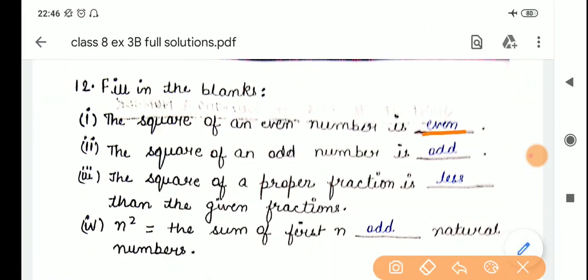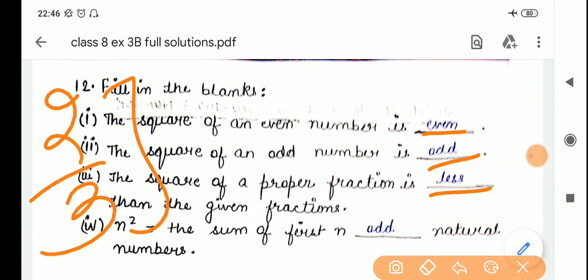Clear? Next property, the square of an odd number is always odd. The square of a proper fraction is less than the given fraction. I told you with example 2 by 3. This is a proper fraction. If you square it, that will be 4 by 9. So, 2 by 3 is greater than 4 by 9. Clear?